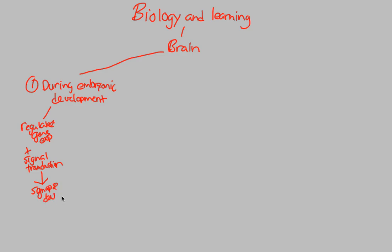Synapse development — abbreviated DEV — essentially means that as you are developing in that embryonic stage before you're born, your brain is already creating synapses, or connections between neurons. These connections between neurons are what allows our brains as humans to be so complex. We're establishing absolutely crucial connections for life.